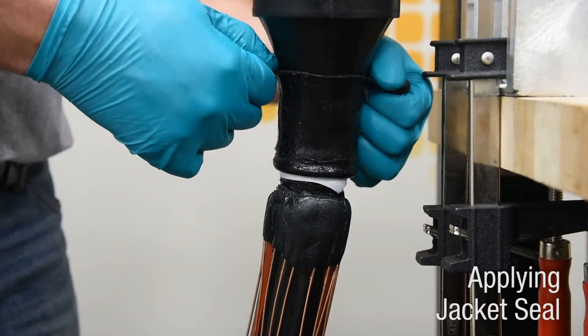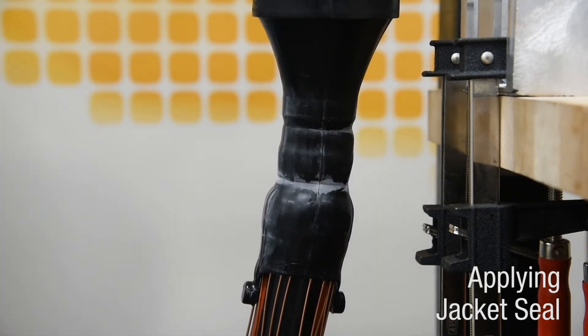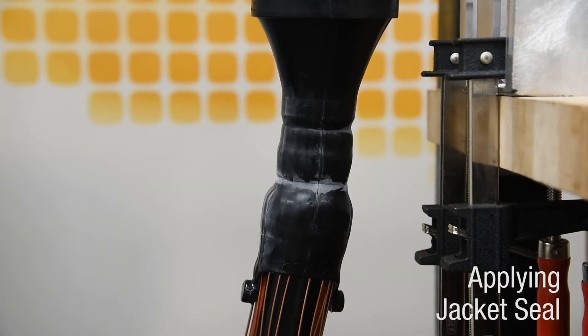Grab the pull tabs and pull out and down to completely deploy the jacket seal over the sealing mastic. Ensure the sealing mastic is not dislodged when unfolding the jacket seal.